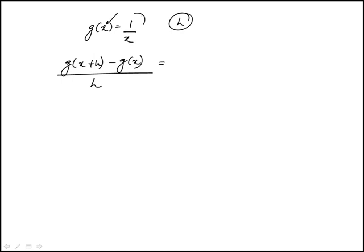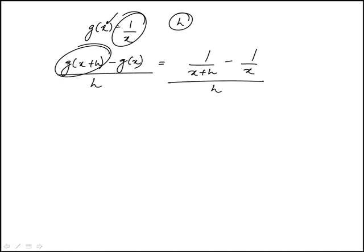So simply replace x plus h here. So this first piece is 1 over x plus h minus 1 over x over h. So we just have to algebraically simplify this.